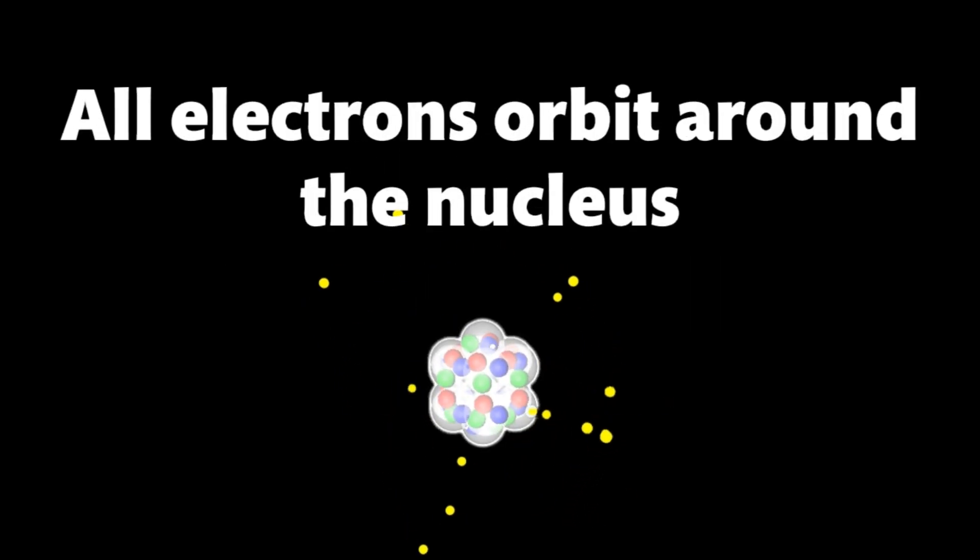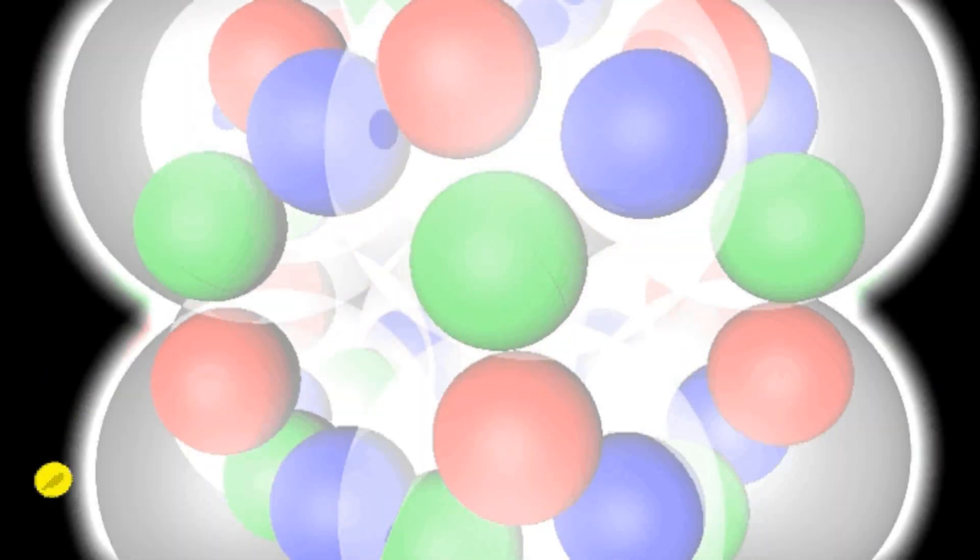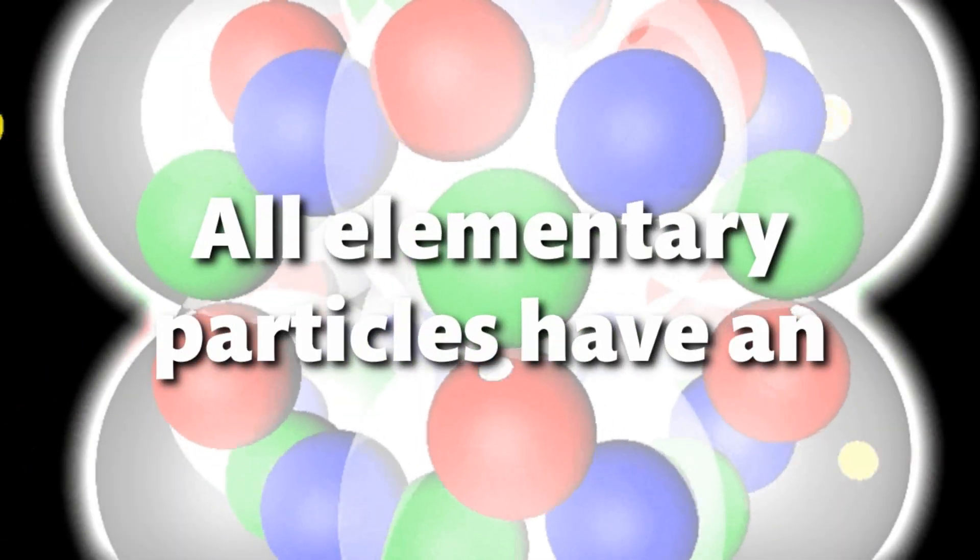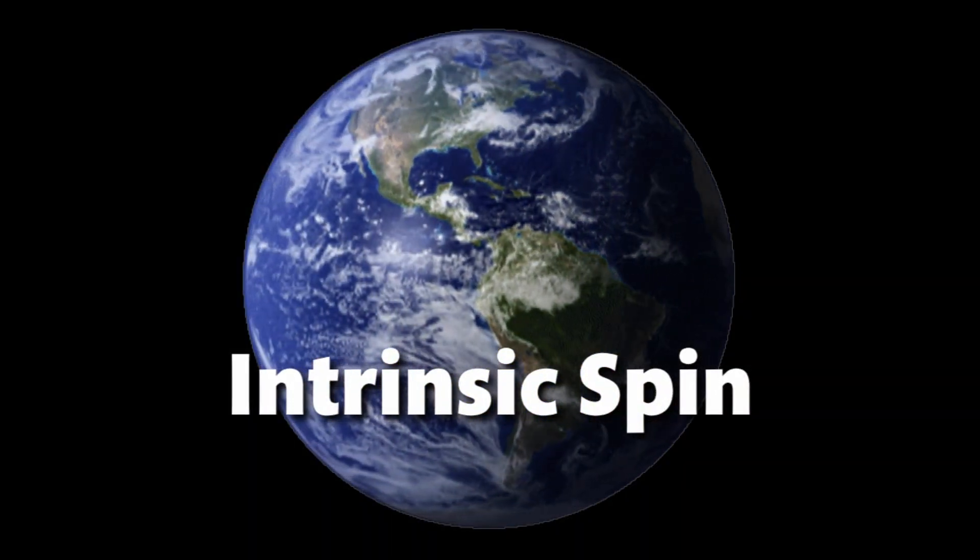You probably knew that all electrons orbit around the nucleus, but did you know that all electrons also spin on their axis, and so do all elementary particles? All elementary particles have an intrinsic spin, which is kind of like how all planets rotate on an axis.